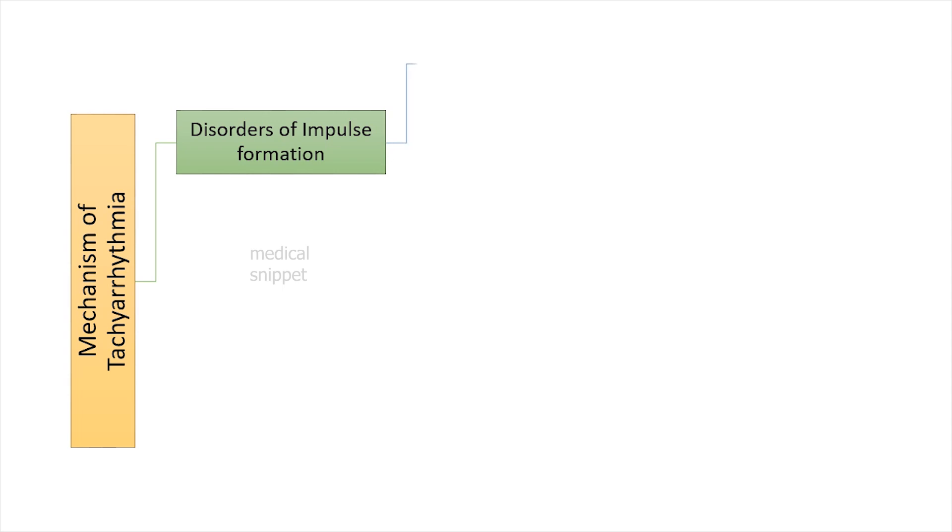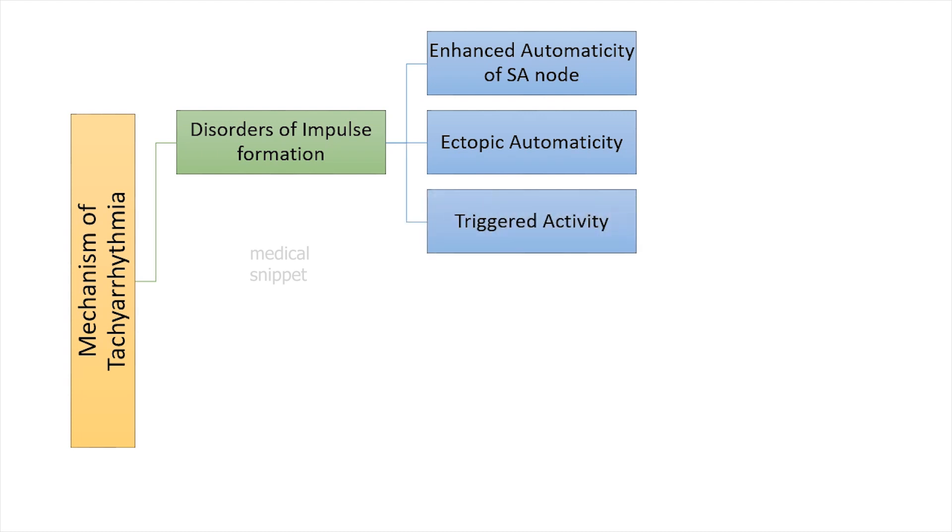Tachyarrhythmias can be produced by enhanced automaticity of the sino-atrial node. Second is ectopic automaticity or pacemaker activity from atrial, ventricular, or Purkinje cells. The last mechanism of abnormal impulse formation is triggered activity, which can be early after depolarization or delayed after depolarization.